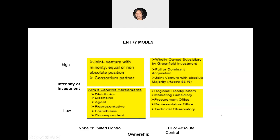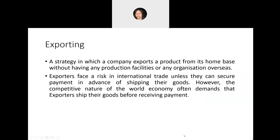When full control is desirable and the intensity of investment is also high, the company can pursue a full or dominant acquisition, or a joint venture with absolute majority — in the US, this historically meant 66 percent or higher, though it varies across host markets. Alternatively, the company can start with a greenfield investment: a completely new venture fully owned by the company, representing 100 percent equity in the new operation in a host country.